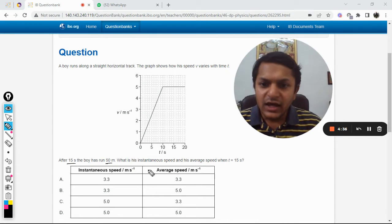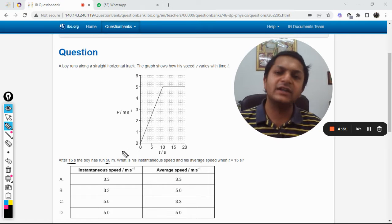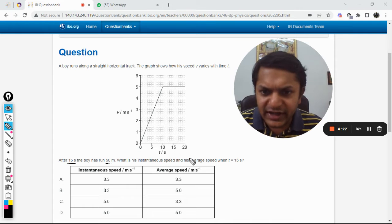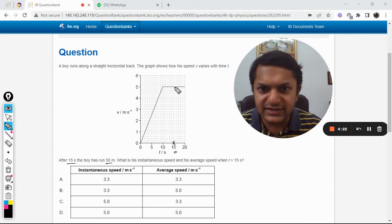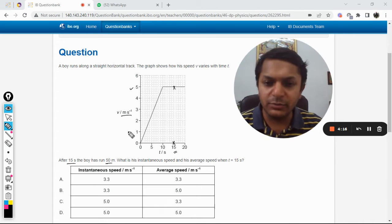The question asks: what is his instantaneous speed and average speed when t equals 15 seconds? We can see from the graph itself that when the time is 15 seconds, the velocity is definitely 5 meters per second. So your answer will be either C or D.